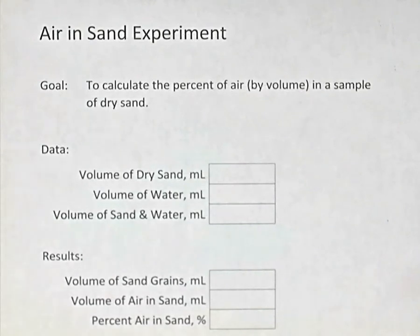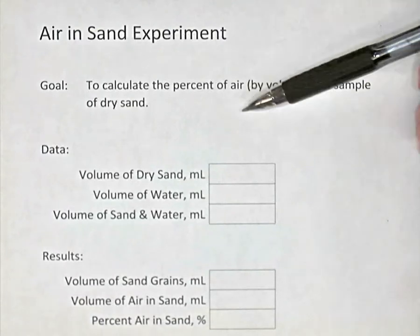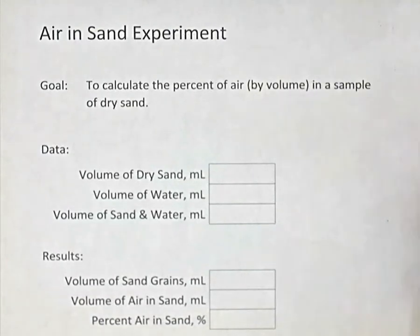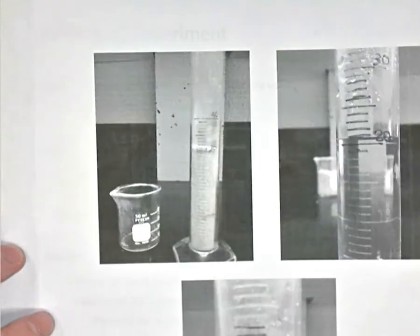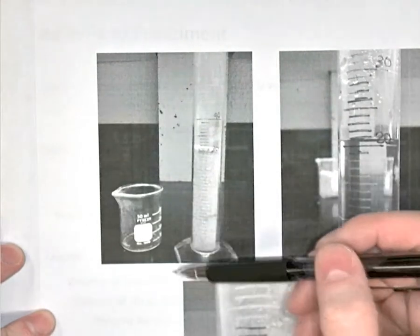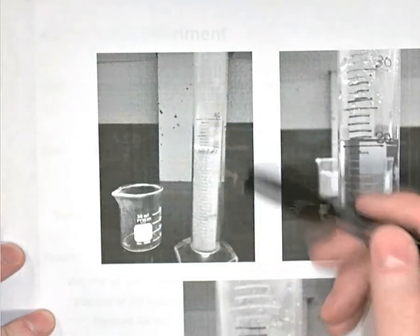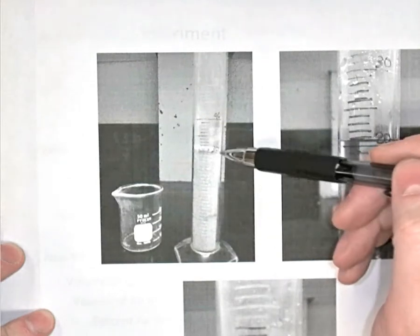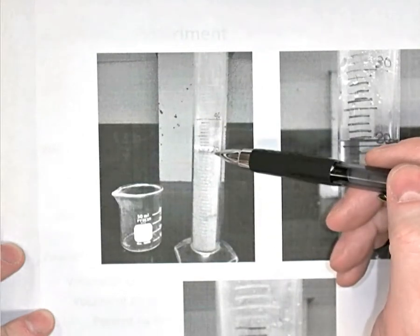To do that, we're going to make three measurements of data. We're going to measure the volume of some dry sand in milliliters. So we've got here a graduated cylinder. We've done this experiment. We put some sand in a beaker, and we poured that into a graduated cylinder, as you can see here, and you measured carefully the volume of the sand.